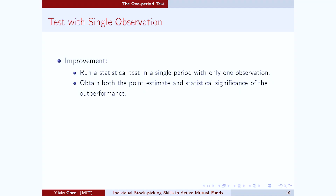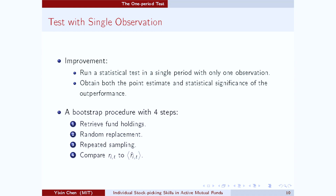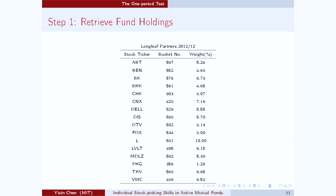So what I want to do is to run a statistical test on this single-period found outperformance, so that we can figure out its statistical significance in addition to the magnitude. The question is: how can we run a statistical test on a single observation? It turns out this can be done using the following bootstrap procedure that has four steps. The first step is to retrieve the holdings of this investor. Here's an example of Longleaf Partners by the end of 2012, and we have three columns here.